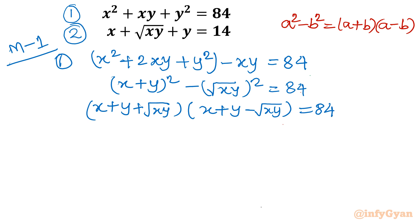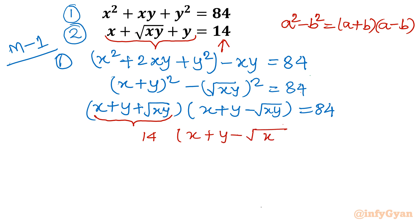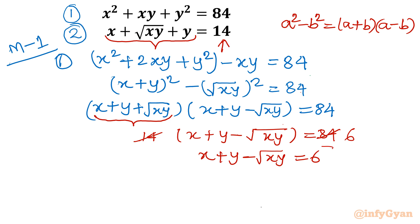Now I substitute equation 2 into the first parenthesis, since x + y + √xy = 14. So I write 14 × (x + y − √xy) = 84. Dividing both sides by 14 gives x + y − √xy = 6. I will call this equation 3.